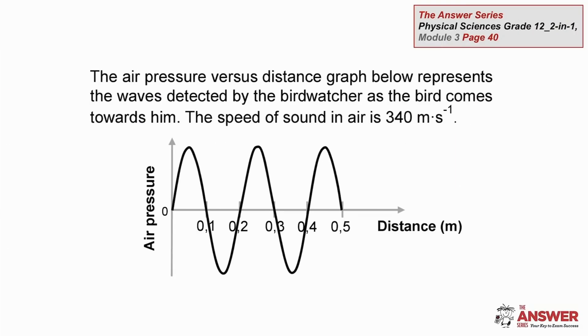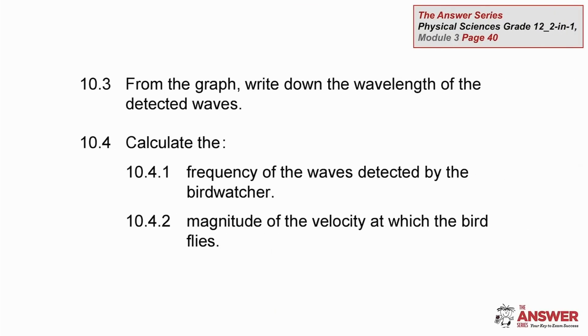Here is the sound wave pattern as detected by the listener. You have got to be able to use your grade 10 knowledge of waves here. Note the fluctuations in air pressure and the distance measurements on the x-axis. Then use that wave pattern to write down the wavelength of the wave. From that, calculate the frequency of the waves and work out how fast the bird is flying.